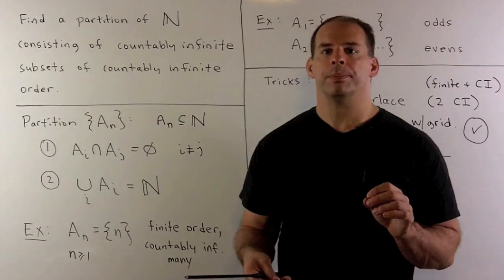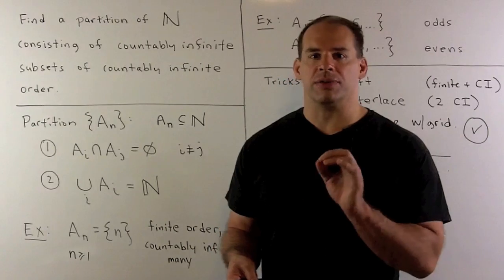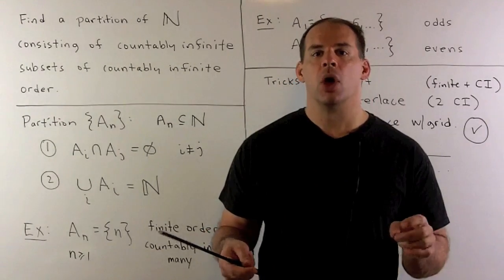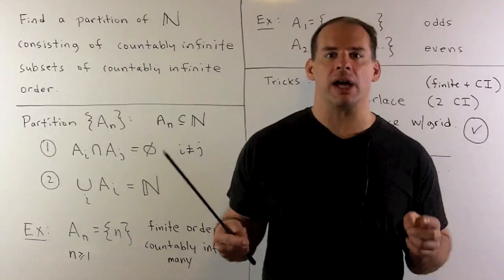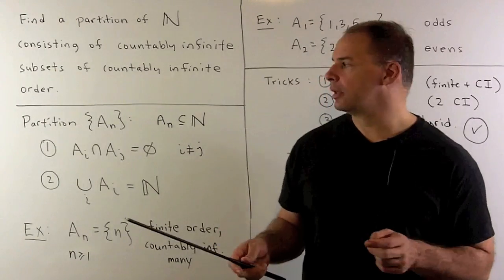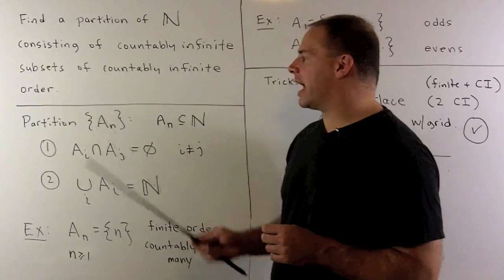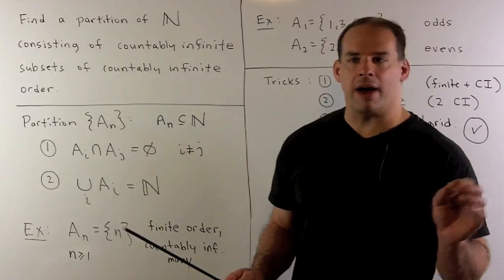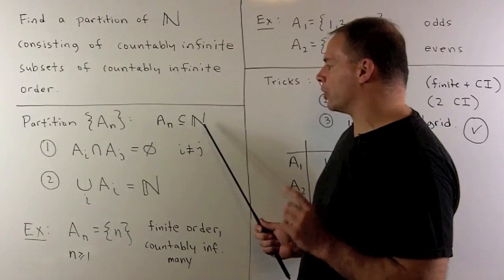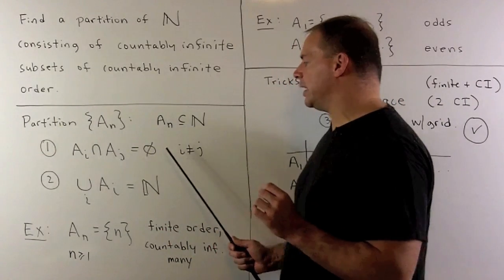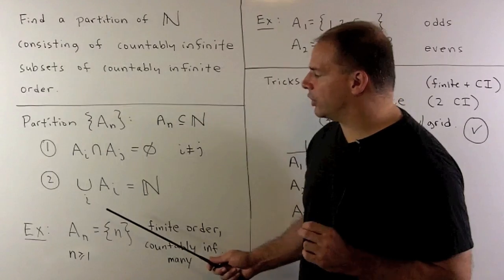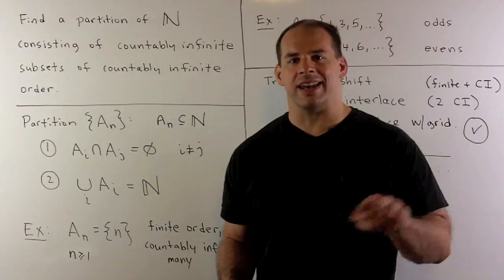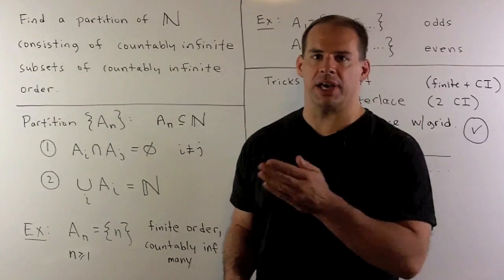The main idea here: we could take a countably infinite number of sequences and thread them together to get a single sequence. We're interested in reversing that process. Recall, we have a partition of the natural numbers — call it A sub n. We have a collection of subsets of the natural numbers where pairwise intersections are empty, and if we take the union over all of these subsets, we get back the natural numbers. So we're just taking the natural numbers and carving it up into subsets.